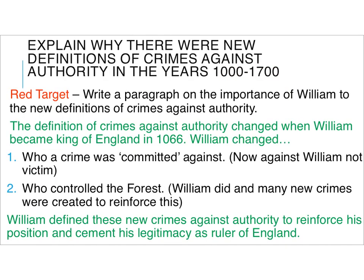Okay, so the red target for the explain why question is about the role of William. Write a paragraph on the importance of William to the new definitions of crimes against authority. A sentence that you could use here is: the definition of crimes against authority changed when William became King of England in 1066. Then you write down how William changed it. I've given you a couple of bullet points there that you can think about. Now, some of you wrote the bullet point information in the middle, but you didn't link it to the question or tie it back to the question at the end of the paragraph.